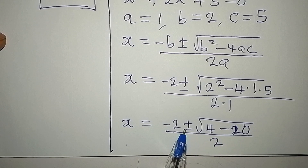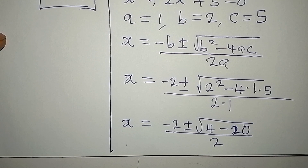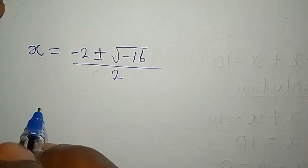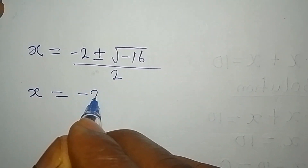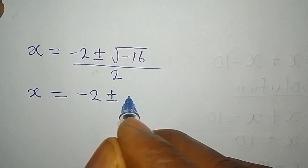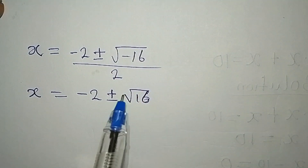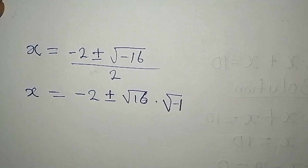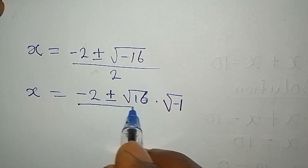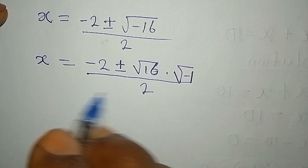We compute 4 minus 20 to get negative 16. So x equals negative 2 plus or minus square root of negative 16. We can factor out the negative and write it as negative 1, giving square root of 16 times square root of negative 1, all divided by 2.